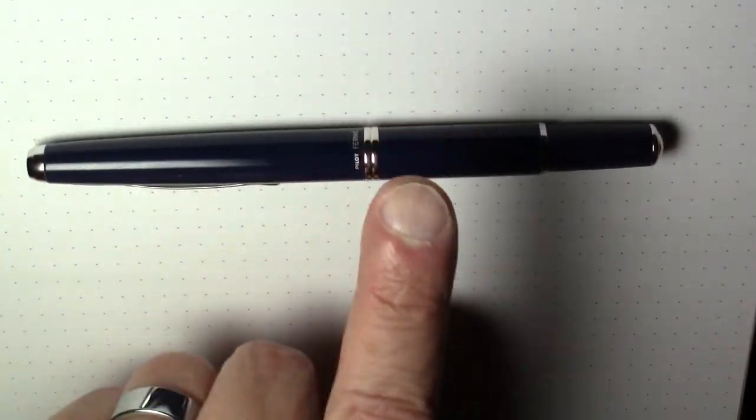So the big disadvantage of this one is the one-handed operation, while possible, is definitely trickier. Well I think that is everything we want to say about the outside of the pen. Let's see how this guy writes and we're going to find that out right now.